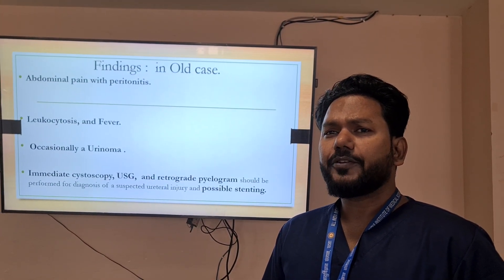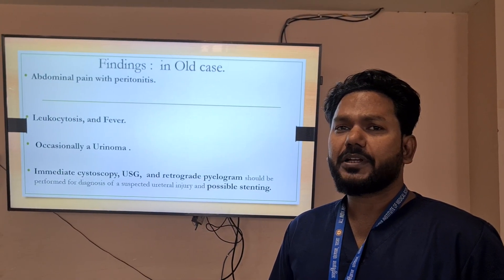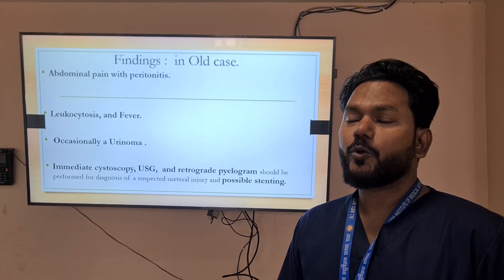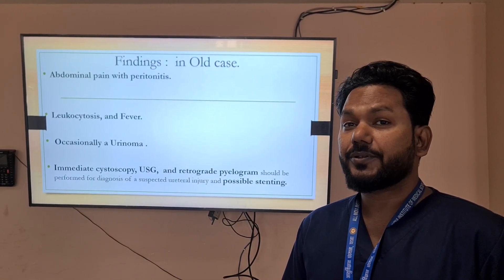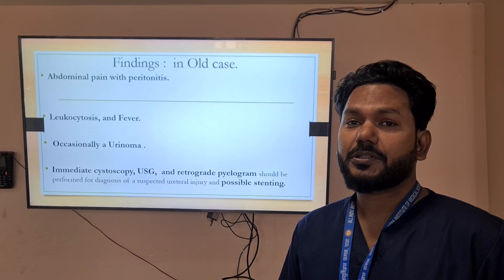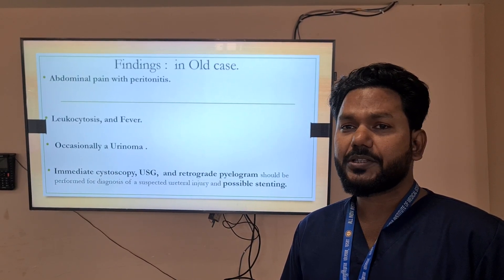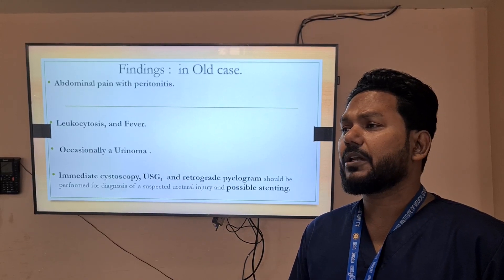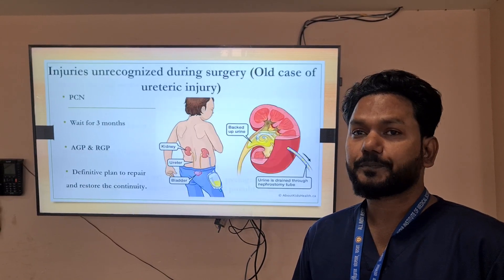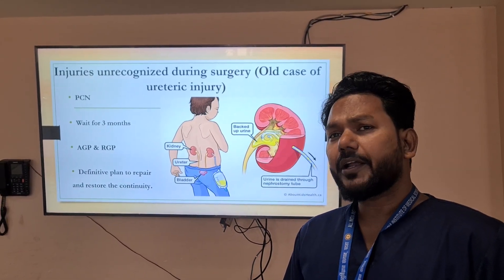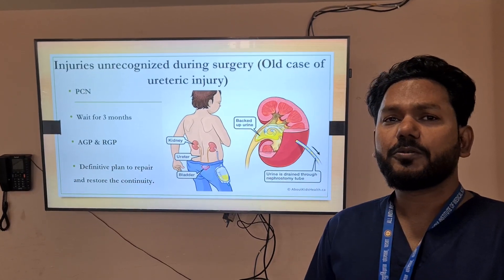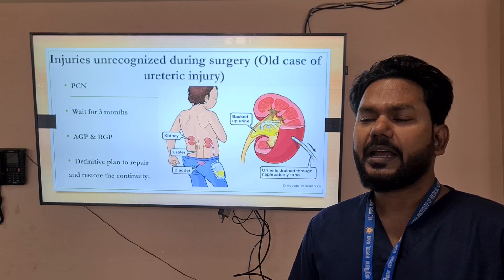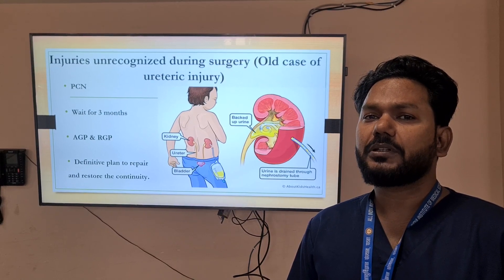In delayed cases of ureteric injury, the patient usually presents with abdominal pain, features of peritonitis, leukocytosis, fever, and sometimes urinoma. In such situations, perform cystoscopy, ultrasound, and retrograde pyelogram, and consider stenting. In old cases of ureteric injury, it is better to perform percutaneous nephrostomy, wait for 3 months, perform antegrade and retrograde pyelogram, and then plan for definitive reconstruction.